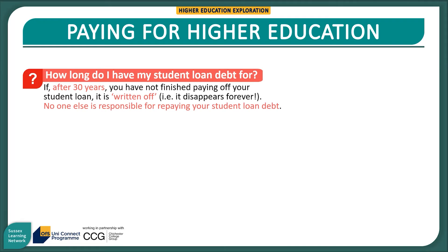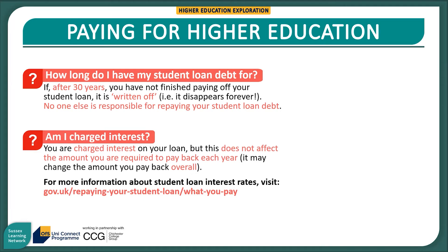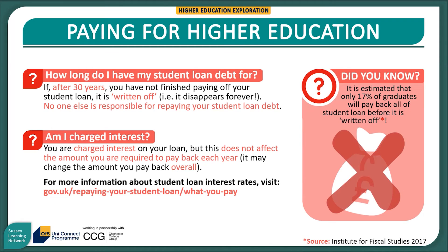There are two more important things to mention about student loan repayments. Firstly, under current rules, you have your student loan debt for 30 years. Whether you have paid off none, some, or nearly all of it, whatever is left after 30 years is completely written off — it disappears forever. Also, no one else is responsible for paying your student loan debt. Second, you are charged interest on your loan, but this does not affect the amount you are required to pay back each month — that is based on your income, not how much debt you have. However, it could mean you pay back more overall. Notably, only an estimated 17% of graduates will pay back all of their student loan before it is written off, meaning there is a good chance you will pay back less than you owe.